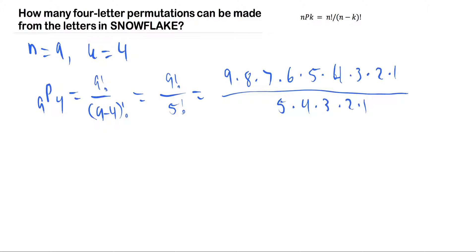To show you can do this by hand, the denominators cancel, so we're only multiplying 9 times 8 times 7 times 6, which equals 3,024. That's the answer.